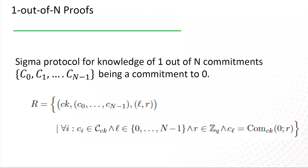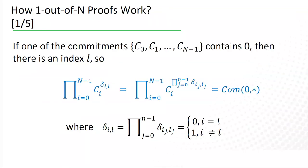Let's see how it works. So, one out of n proofs is a sigma protocol for knowledge of one out of n commitments, C0, C1, Cn minus 1, being a commitment to zero. To be clear, we are working with Pedersen commitments. So, the idea behind this protocol is saying that one out of n commitments contains zero, is equivalent saying that there exists an index L, so that the product of C i to the delta i L will be a commitment to zero. Delta i L here is the Kronecker delta. It equals to one only when the index i is equal to L and zero otherwise.